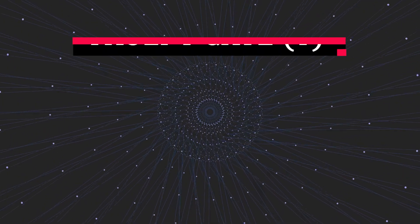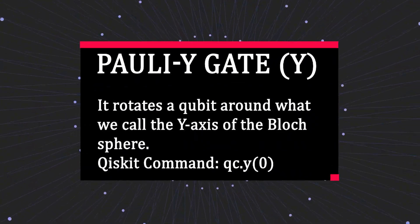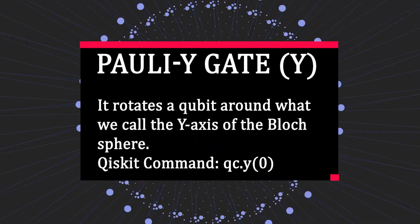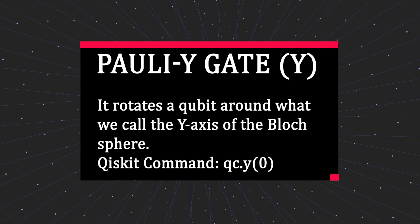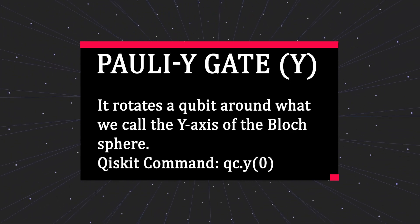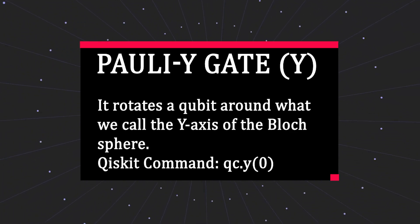Number three: Pauli Y gate, referred to as the Y gate. It rotates a qubit around what we call the Y axis of the Bloch sphere, which is a geometric way of visualizing qubit states. By applying a Y gate, you're changing the qubit state in a different dimension than the X or Z gates, affecting both its amplitude and phase.